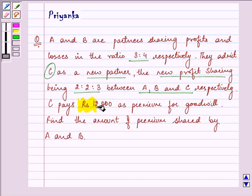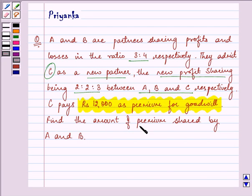C pays Rs. 12,000 as premium for goodwill. Find the amount of premium shared by A and B.